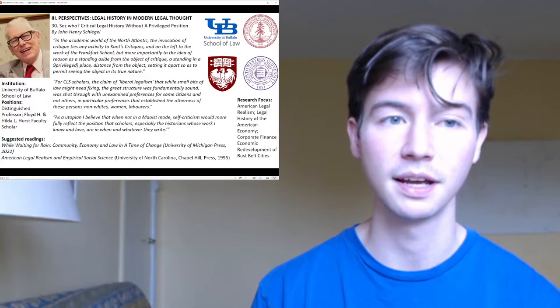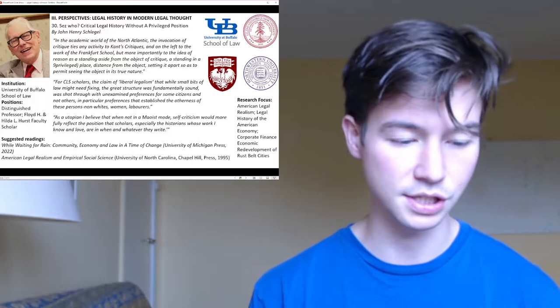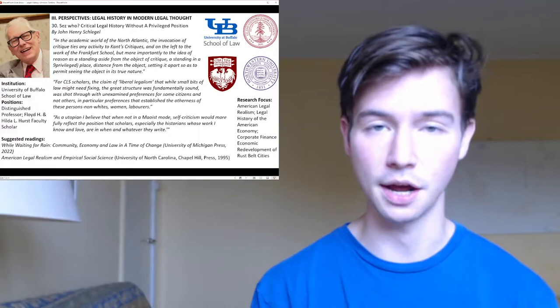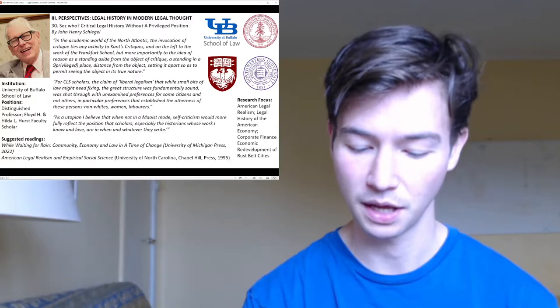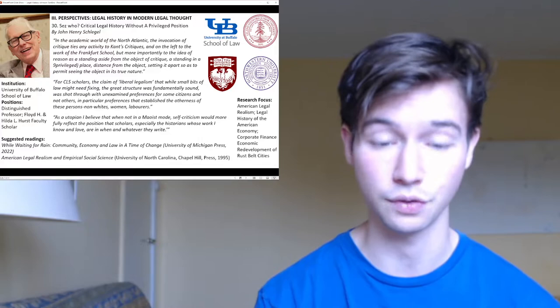His chapter is Chapter 30, 'Says Who' — spelled S-E-Z — Critical Legal History Without a Privileged Position. It is also in Part 3, Perspectives: Legal History and Modern Legal Thought. His section is not divided into multiple subsections. He opens with a quote from W.H. Auden: 'No more than they can we suppress the universal wish to guess, or slip out of our own position into an unconscious condition.' He then opens with: back around the turn of the century when Christopher Tomlins was working on his work on British colonization of North America, where he had to critique the talk of helping the natives with Christianity and civility — but Tomlins shows it was actually for different reasons.